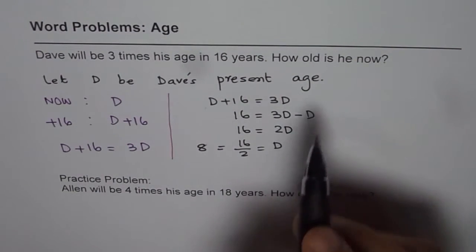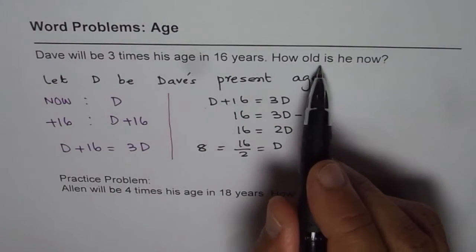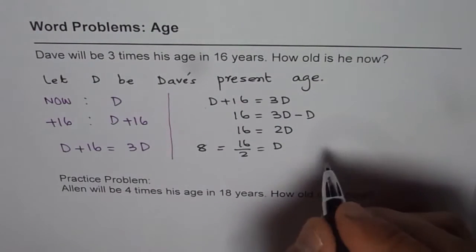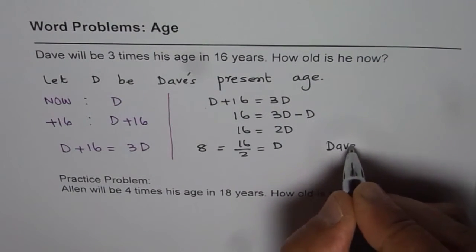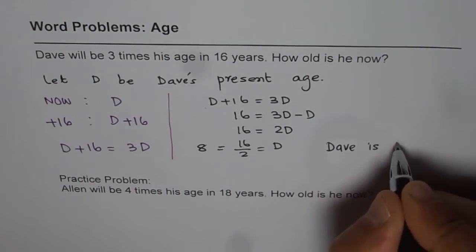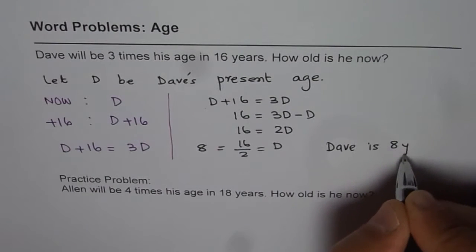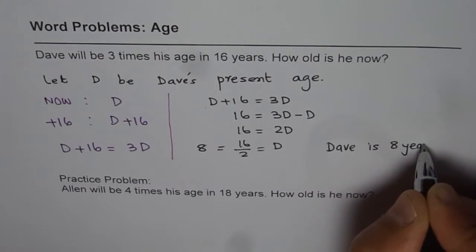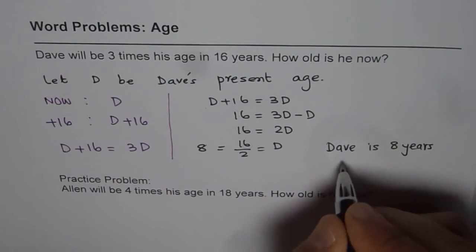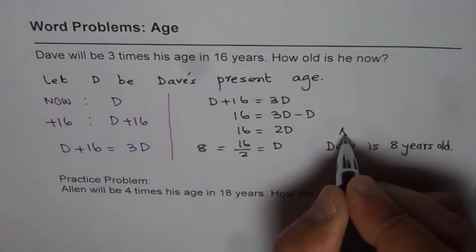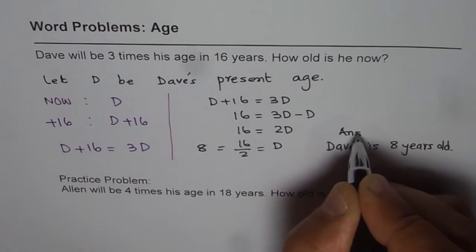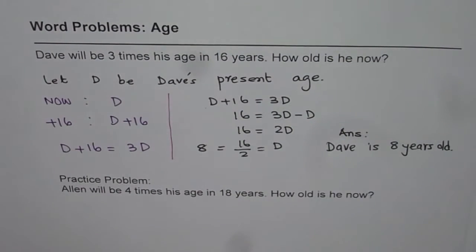Therefore, we can write down how old he is now. Dave is 8 years old. So that is our answer. That is how we can solve such word problems.